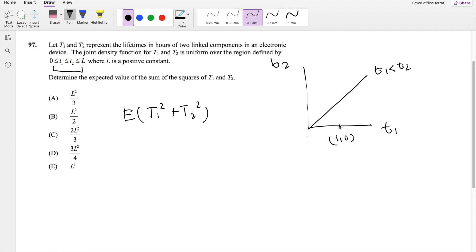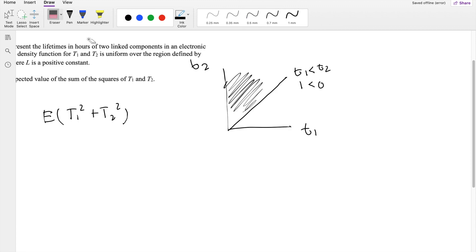This is going to be like 1, 0, right? 1, 0. So is 1 less than 0? No. So it must be this area right here. But the biggest number it could be is L, right? L. L.